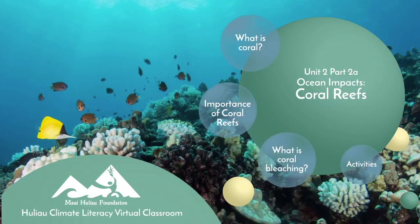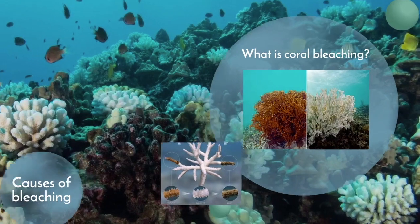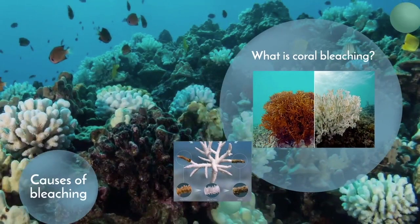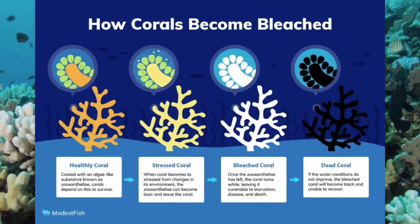Now that we know the biology of coral and its biological and cultural significance, let's look at one of the main threats: coral bleaching. This is a photo of a branching coral. On the left, you see a healthy coral colony, and on the right, the same coral colony is completely white or bleached. This is the calcium carbonate skeleton being exposed. The zooxanthellae not only provides the coral with the nutrients it needs to survive, but is also responsible for the color of the coral. A healthy coral colony will display vibrant colors.